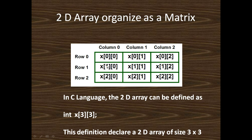The elements are defined inside this matrix. Here x is the name of the two-dimensional array. The cell references are: x[0][0], x[0][1], x[0][2] for row 0; x[1][0], x[1][1], x[1][2] for row 1; and x[2][0], x[2][1], x[2][2] for row 2.